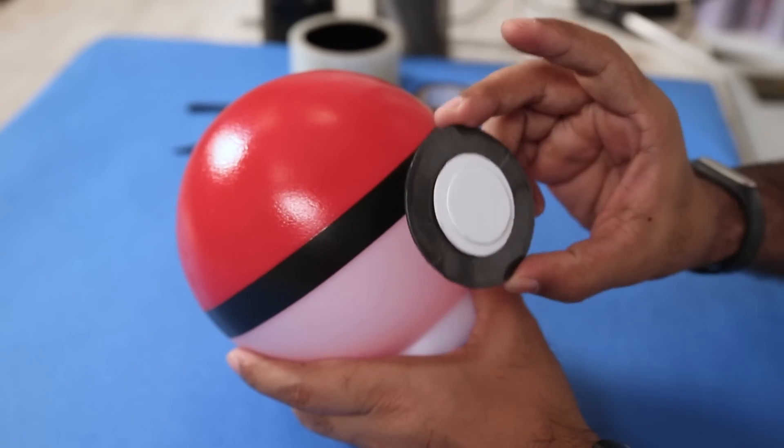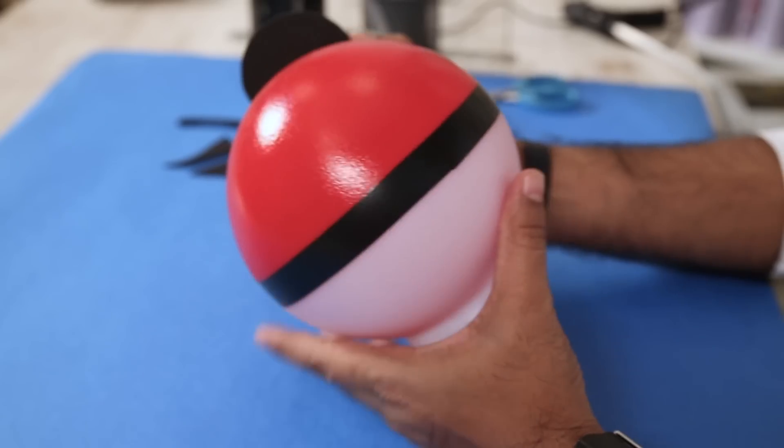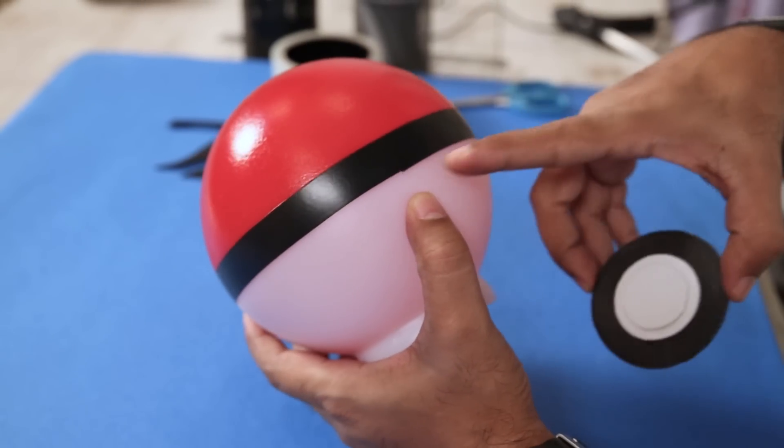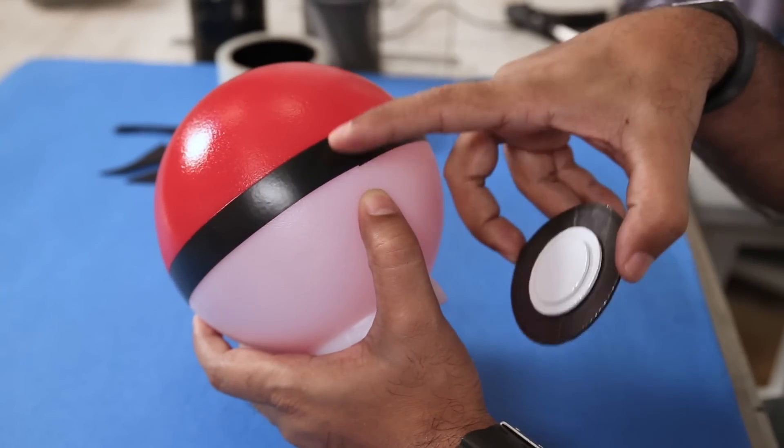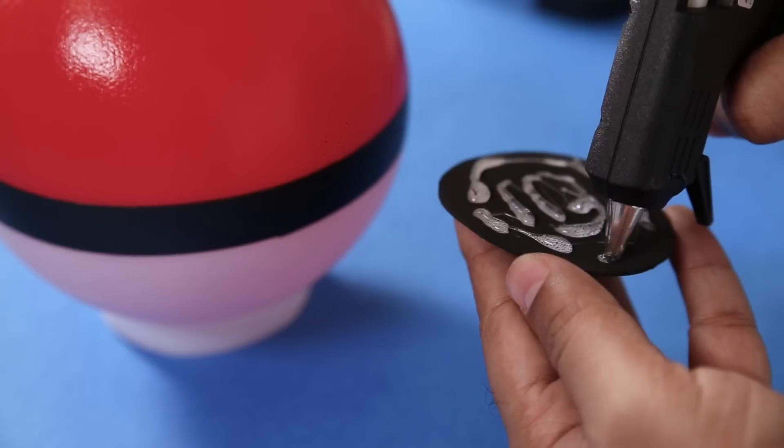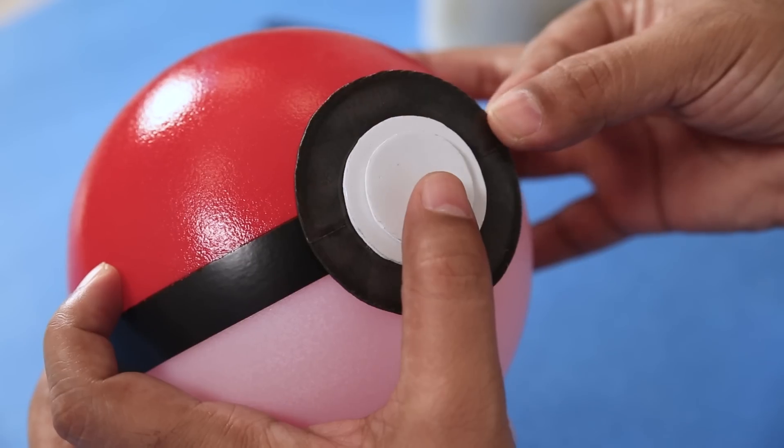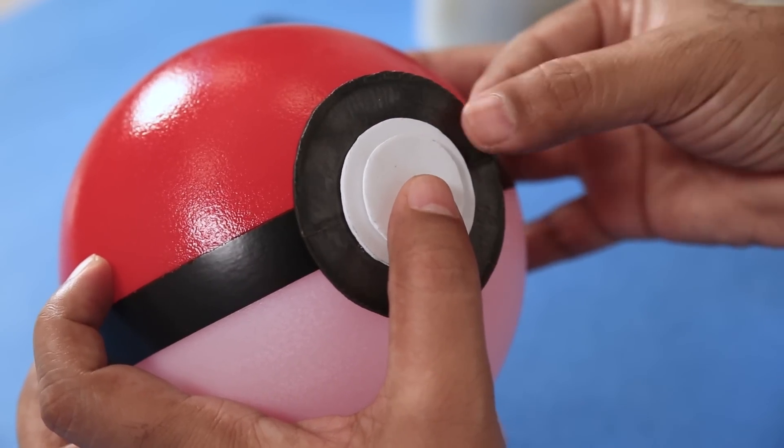And now we'll take this detailing, the button. And we will place it right here. Where the two tapes are overlapping. Because I want to hide this flaw as well. And it's ready.